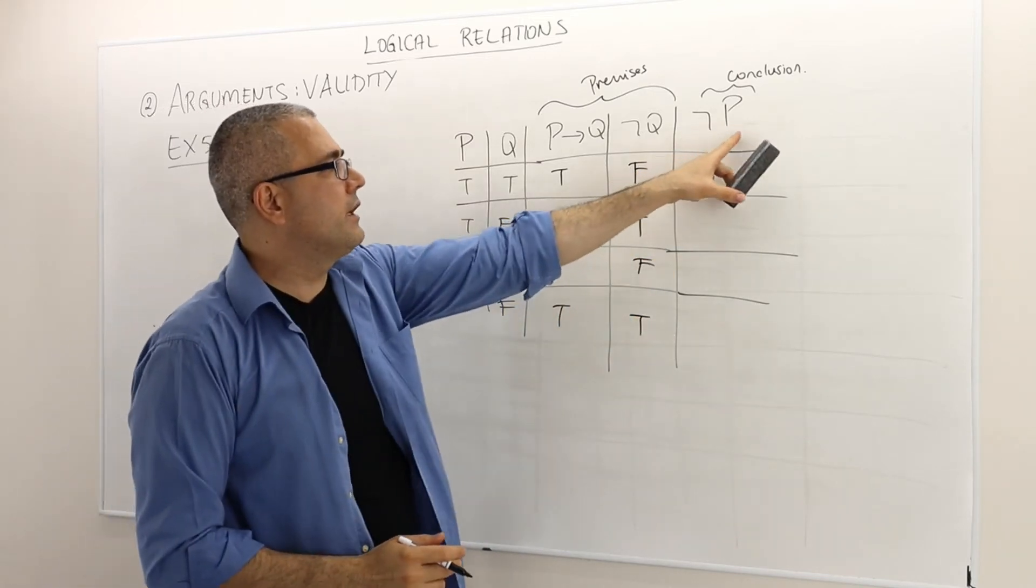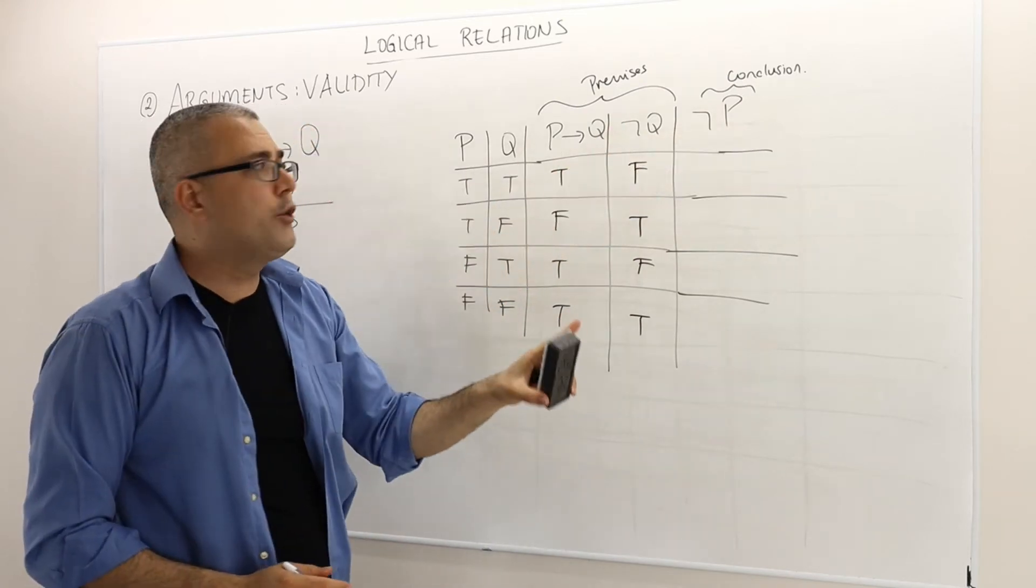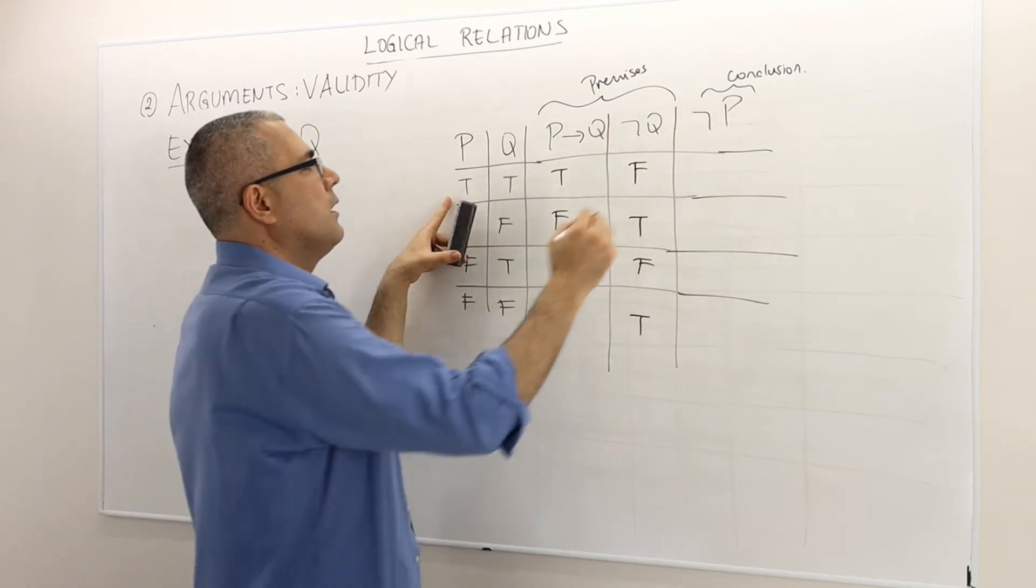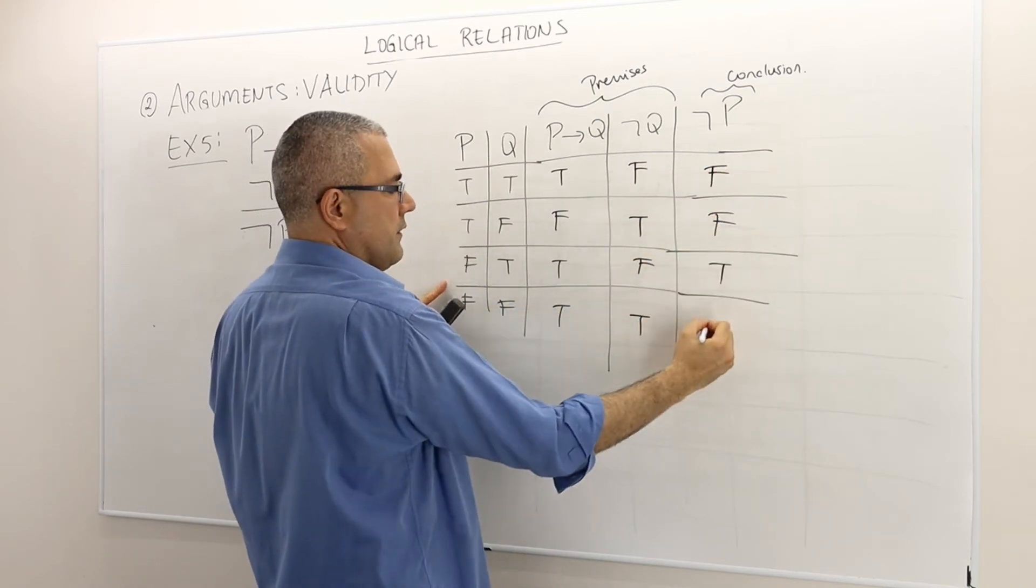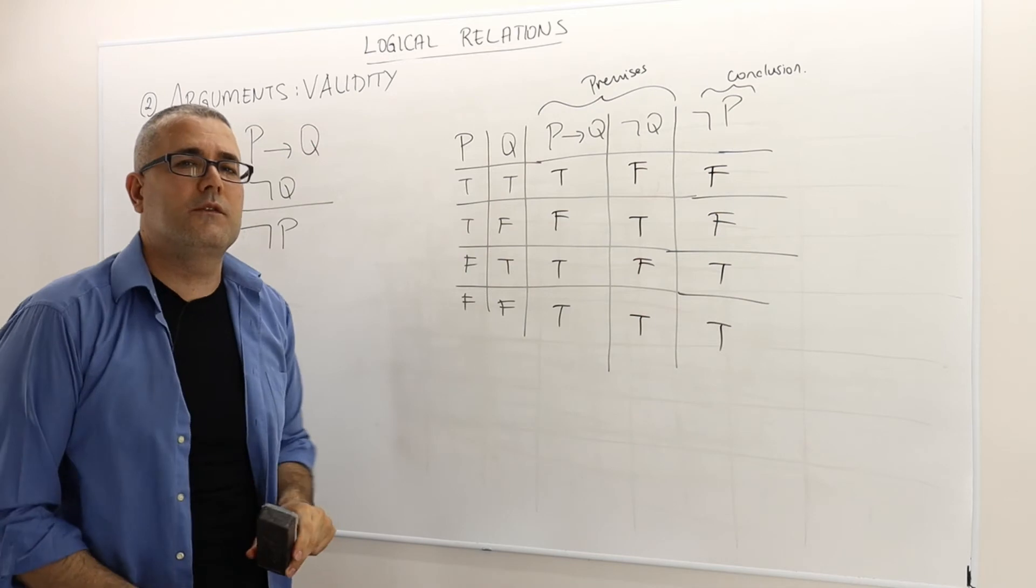And then the conclusion, again, not P, is true whenever P is false. If this is true, this is false. If this is true, this is false. And this is true and true whenever P is false.